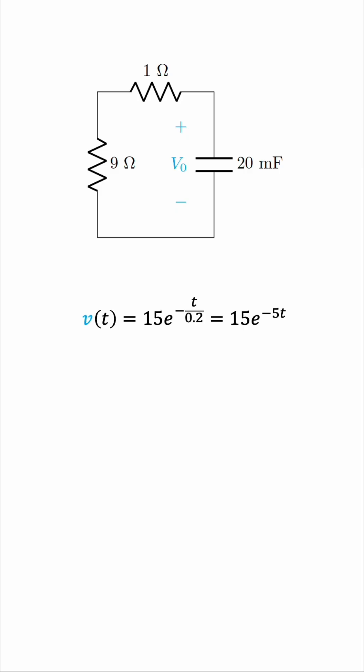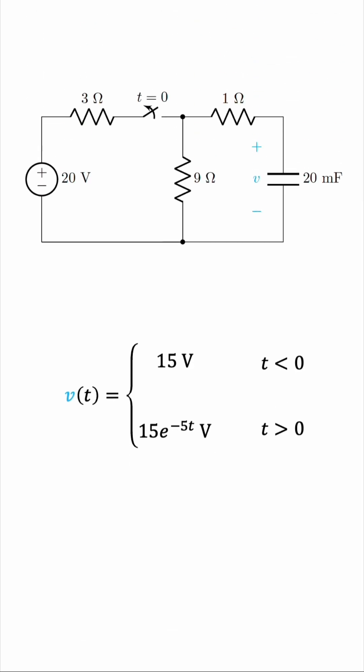So that's it. The voltage as a function of time is split into two cases. The first case is 15 volts before the switch was opened. That's the voltage the capacitor was charged to from the source. And then 15e to the negative 5t volts is the voltage across the capacitor after the switch was opened. So this is the voltage as a function of time in the original circuit.